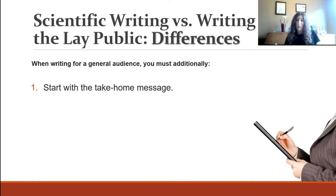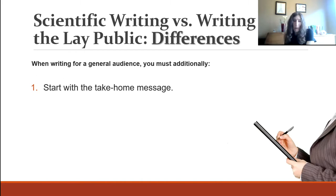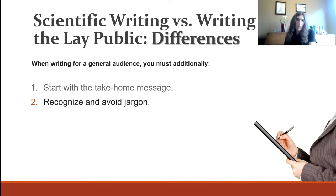When writing for a general audience, you have to start with the take-home message. In science, we build up an argument — background, question, methods — and don't get to the punchline until the end. That's not hard to switch, but if you're a scientist you're just not used to starting with the punchline. You have to learn to lead with it first.